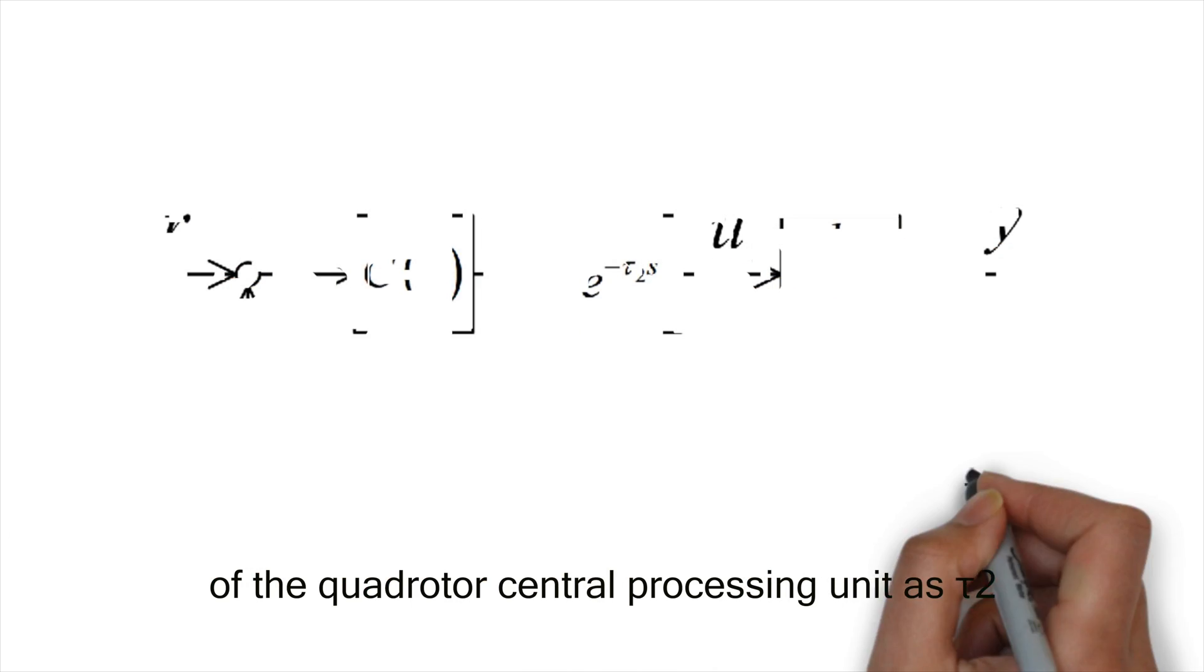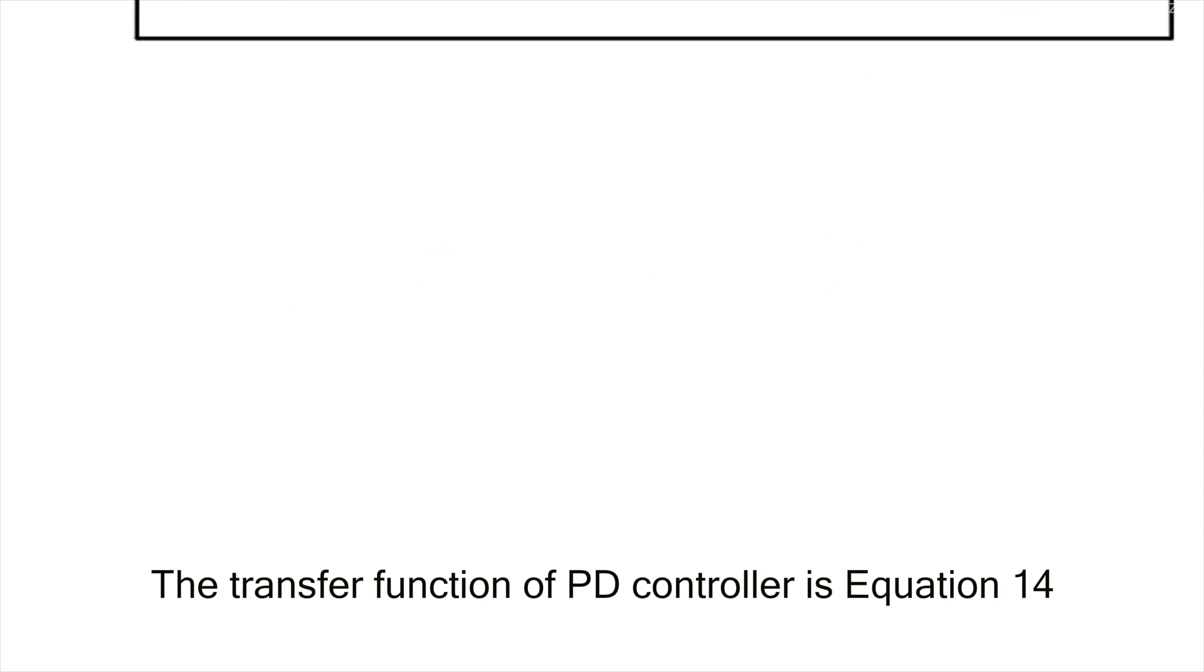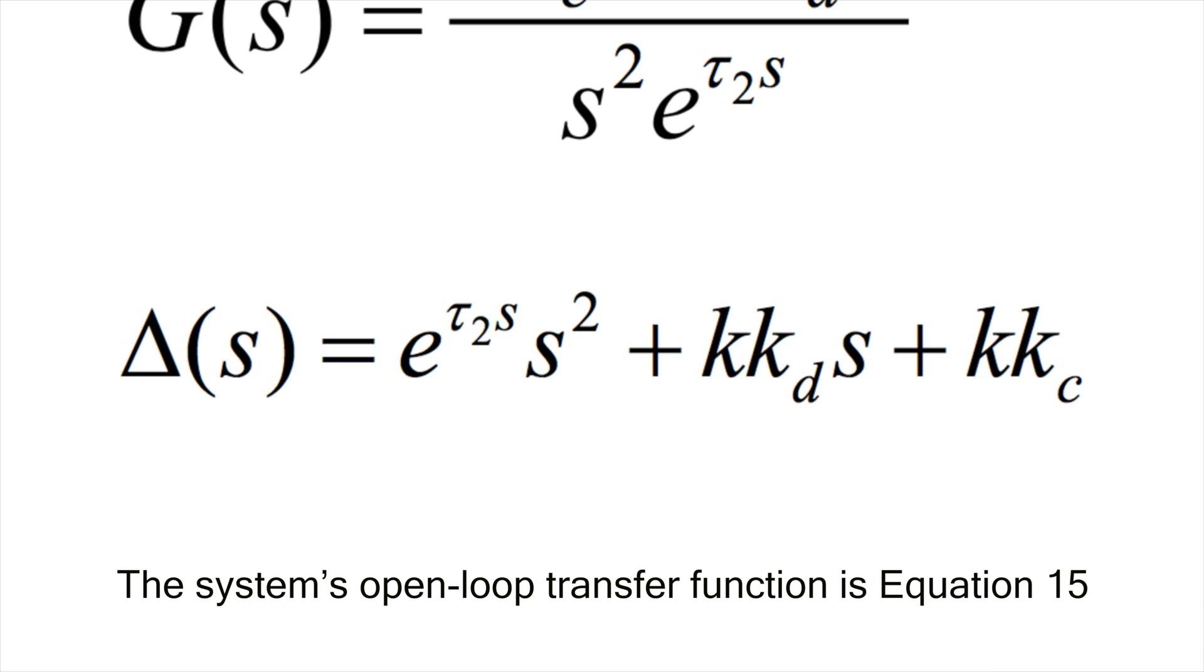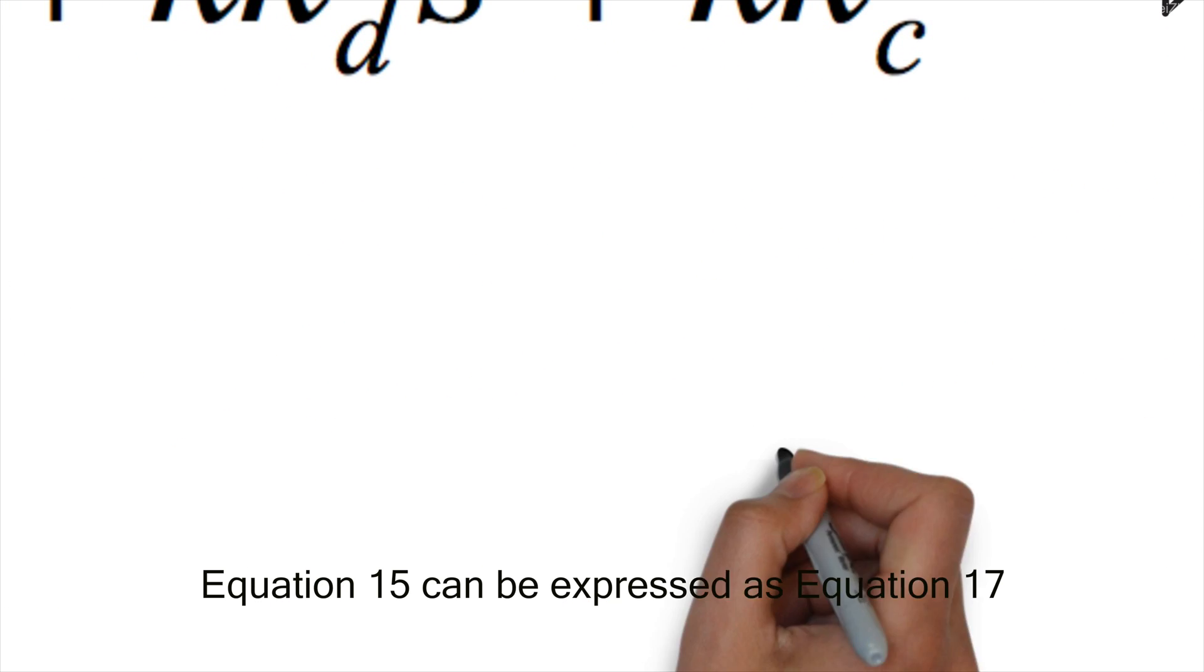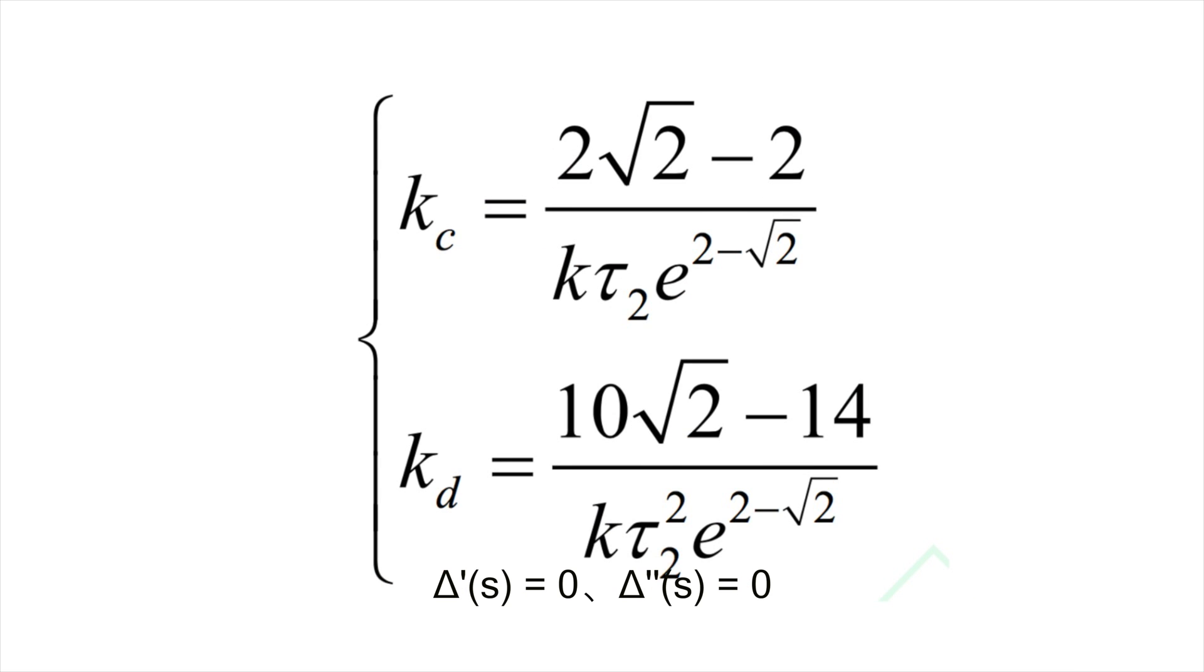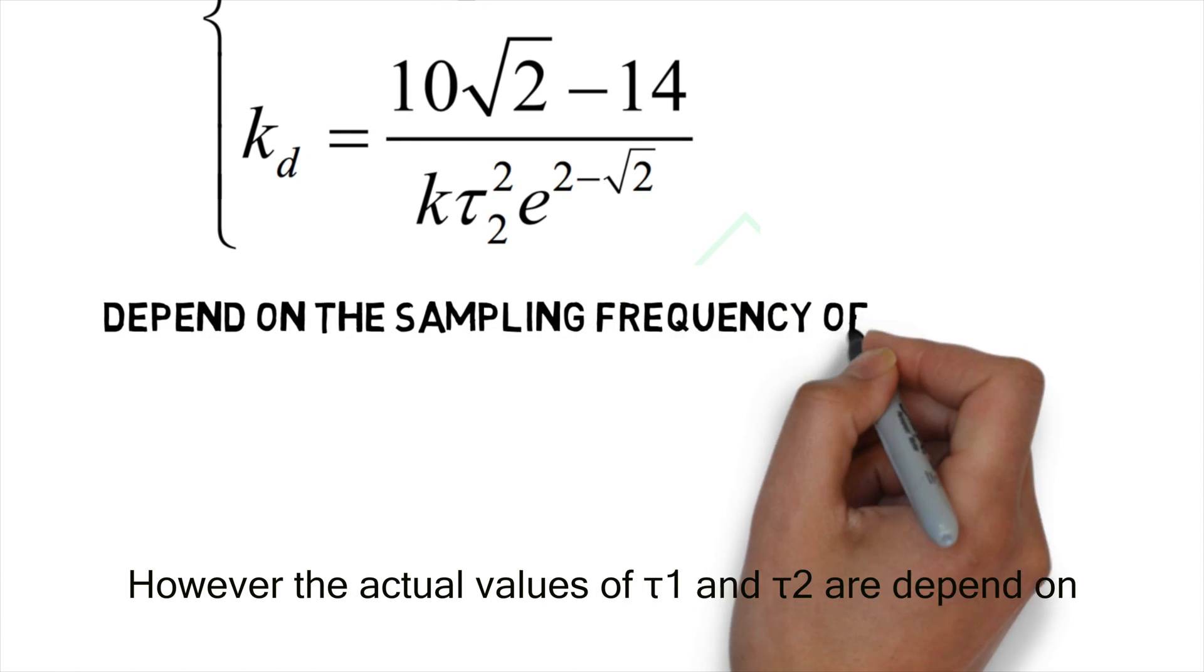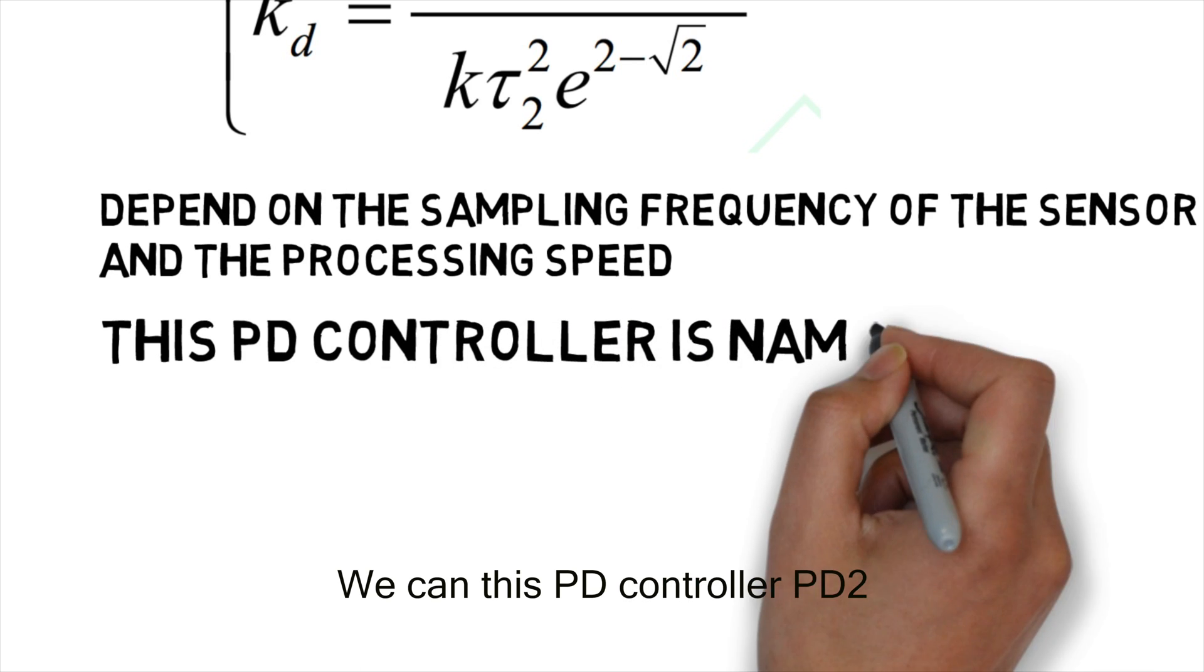Recording the time delay of the quadrotor central processing unit as tau2, the control block diagram is shown in figure three. The transfer function of the PD controller is equation 14. The system's open-loop transfer function is equation 15. Applying the first and second derivative to equation 15 gives equation 16. Equation 15 can be expressed as equation 17. Apparently, when lambda equals to minus a, we have delta s equals to zero. The first and second derivative of delta s is zero. Applying those values to equation 15 and 16 gets equation 18. However, the actual values of tau1 and tau2 depend on the sampling frequency of the sensor and the processing speed. They can be measured experimentally. We call this PD controller PD2.